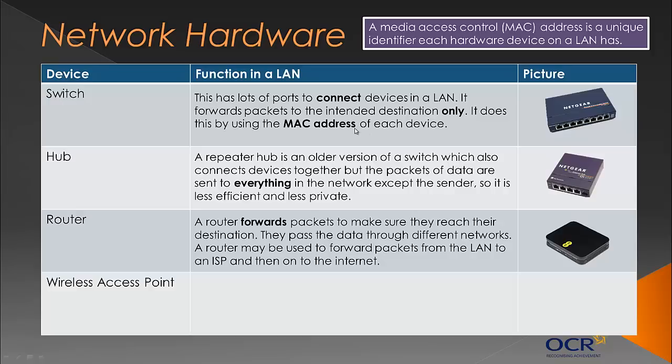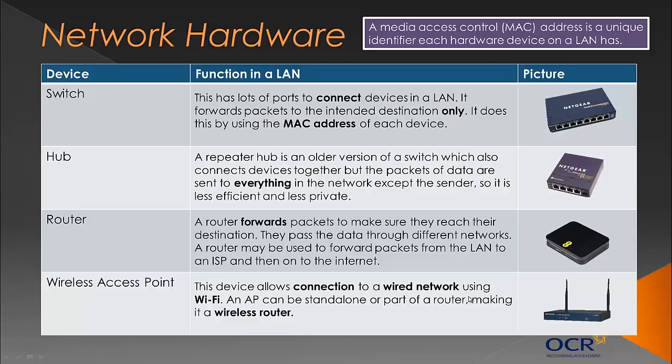A router forwards packets between different networks — for example, from the LAN to your internet service provider and onto the internet. Like a switch, it uses similar addressing technology but also learns the fastest route to certain destinations and connects with other routers on the internet. A wireless access point (AP) is a device that allows wireless devices to connect to a wired network using Wi-Fi; it can be standalone or built into a router, making it a wireless router.